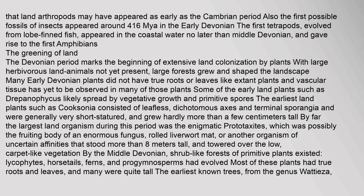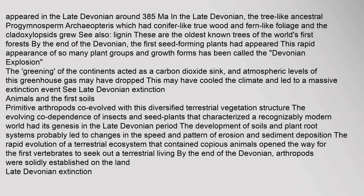The earliest known trees, from the genus Wattieza, appeared in the late Devonian around 385 Maya. The tree-like ancestral progymnosperm Archaeopteris, which had conifer-like true wood and fern-like foliage, and the cladoxylopsids also grew. These are the oldest known trees of the world's first forests. By the end of the Devonian, the first seed-forming plants had appeared. This rapid appearance of so many plant groups and growth forms has been called the Devonian explosion.